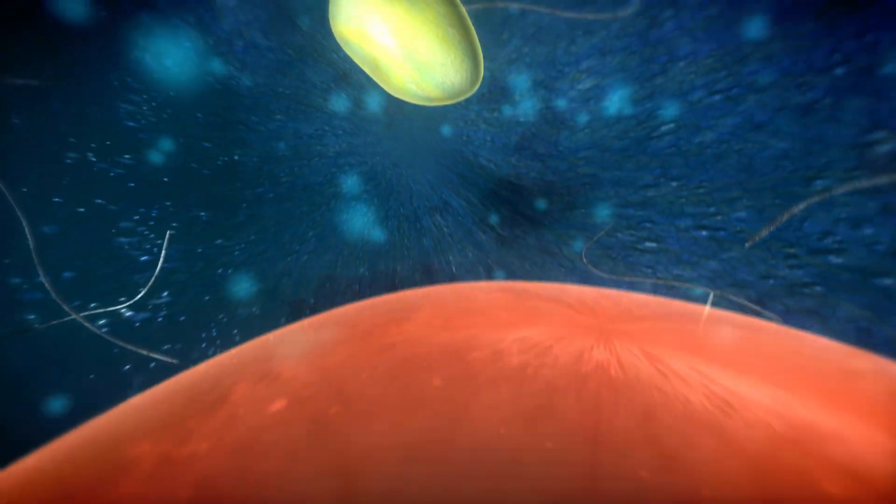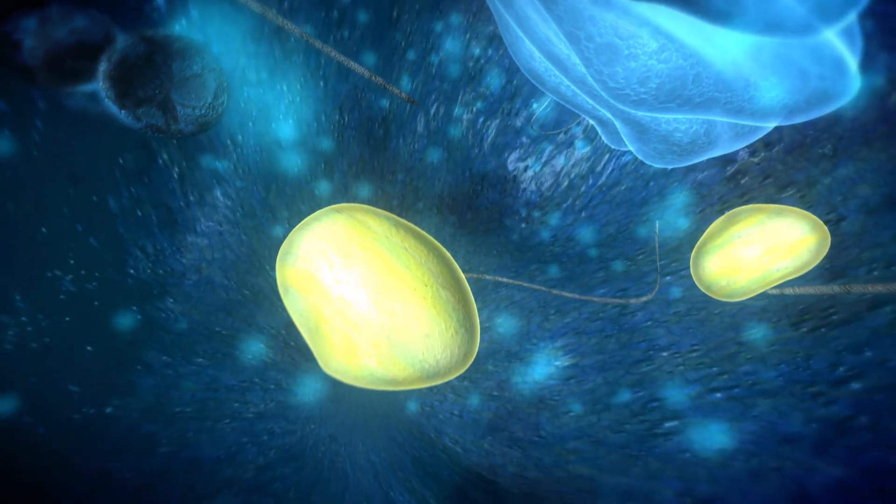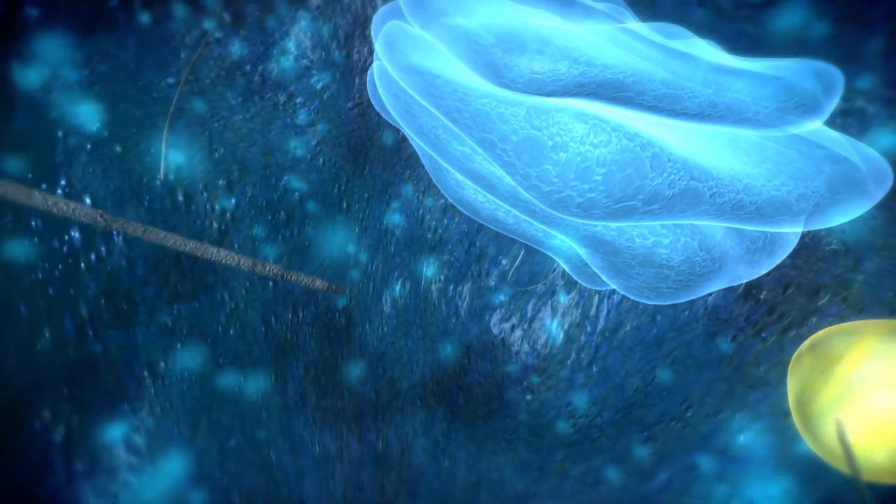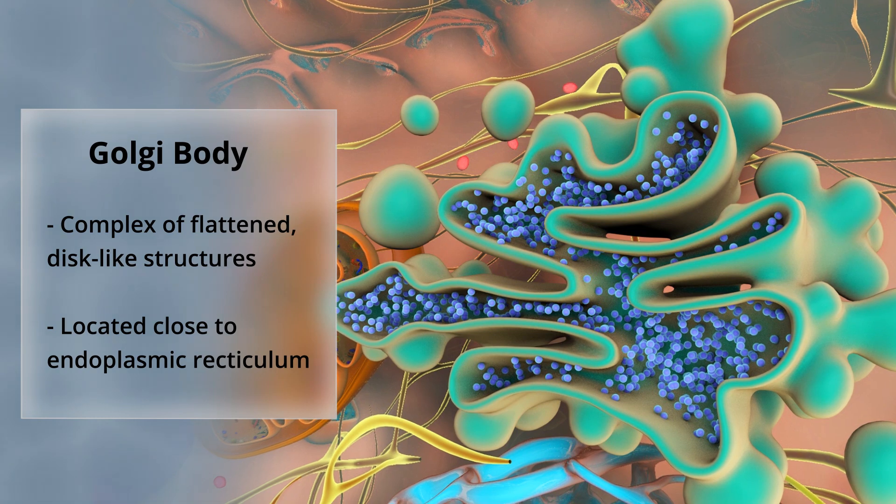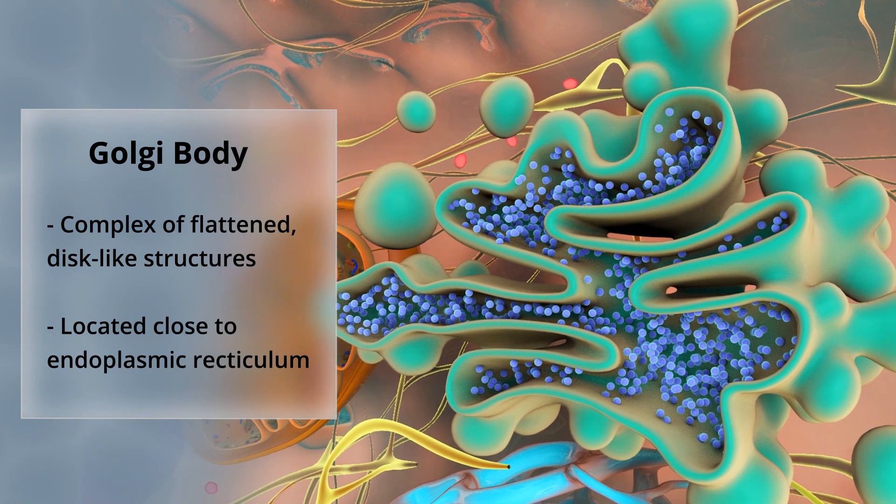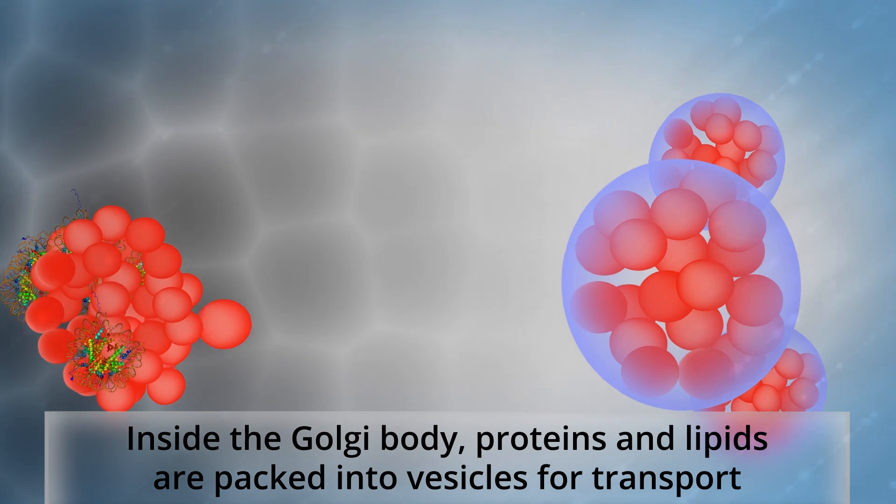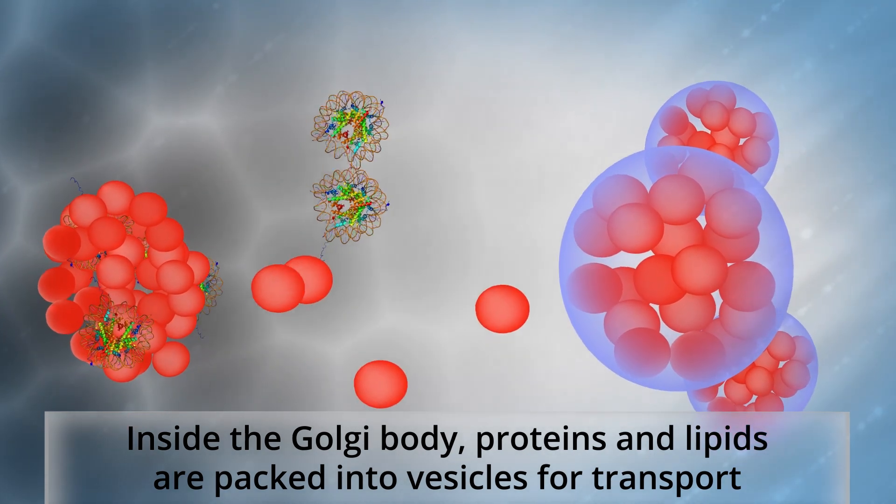An organelle closely related to the endoplasmic reticulum is the Golgi apparatus, or the Golgi body, a complex of flattened disc-like structures located close to the endoplasmic reticulum. The Golgi apparatus receives proteins and lipids from the rough ER, modifies and sorts them, and then packs them into vesicles to be sent to their final destinations within the cell.